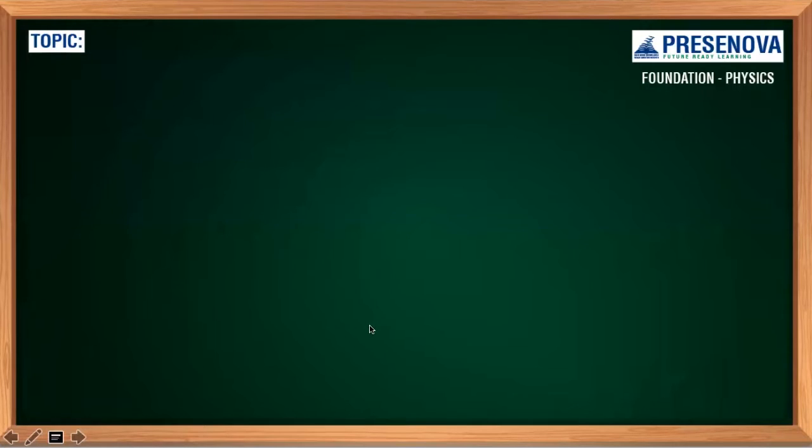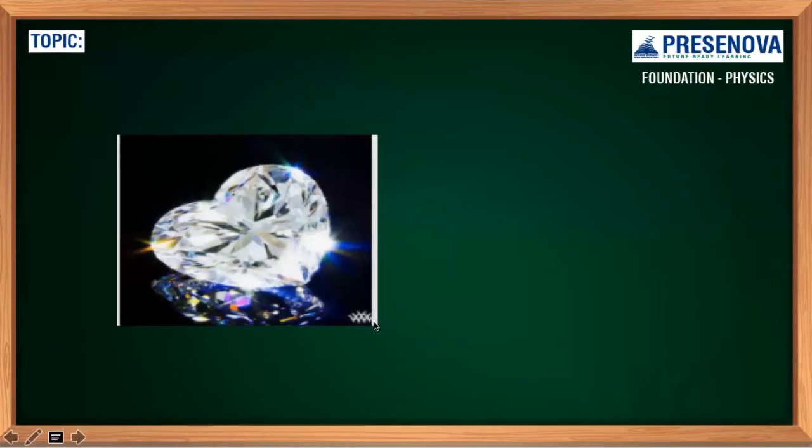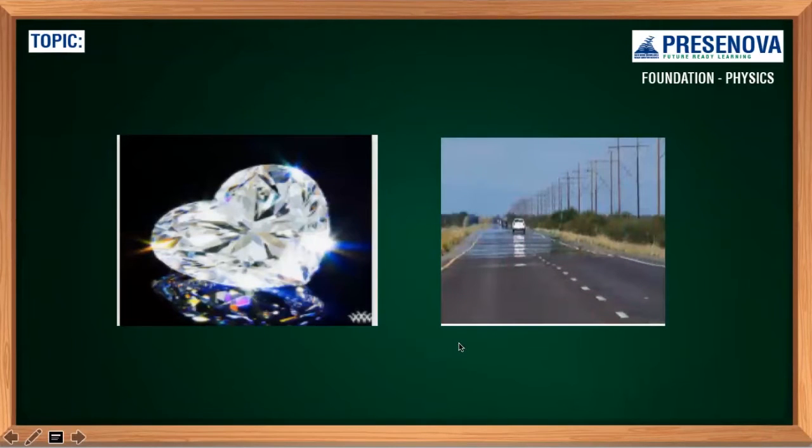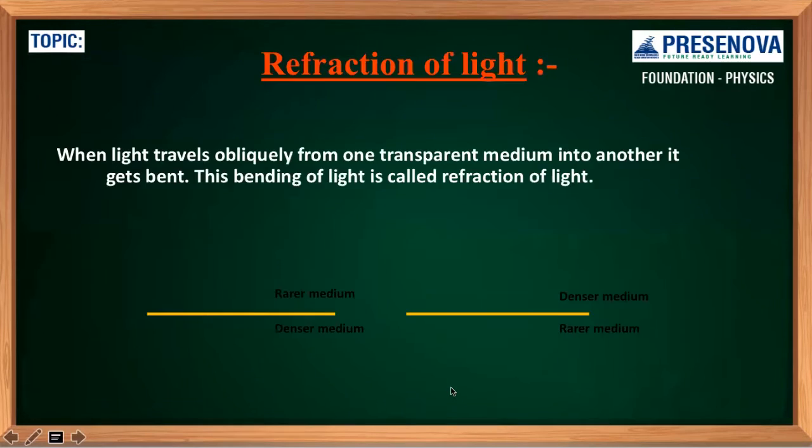Have you ever wondered why does diamond sparkle so much, or why do we see mirage, which is an optical illusion where you see water on the road when actually it is not there? The answer to both your questions is total internal reflection, which we are going to study in today's class.